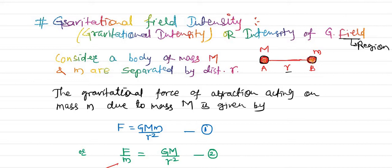This separation r determines the magnitude of gravitational force. According to Newton's law of gravitation, the gravitational force is F = G × M × m / r². If we rearrange this, bringing small m to the left side, we get F/m = G×M / r².